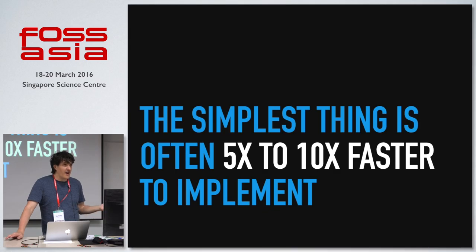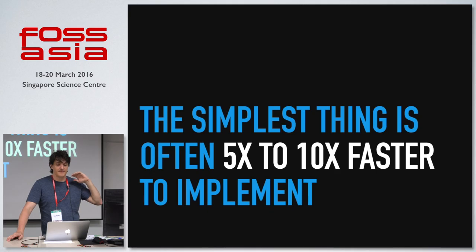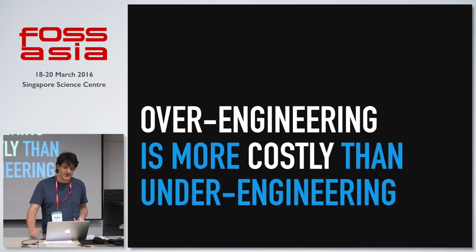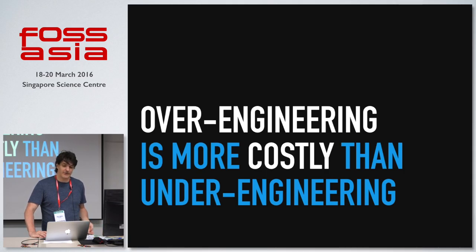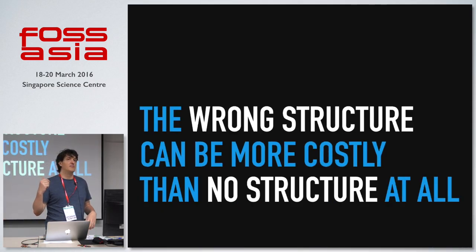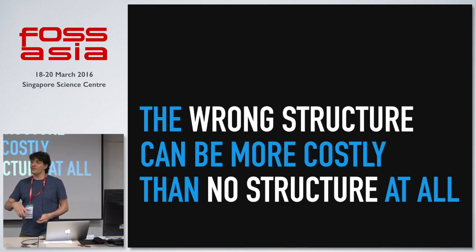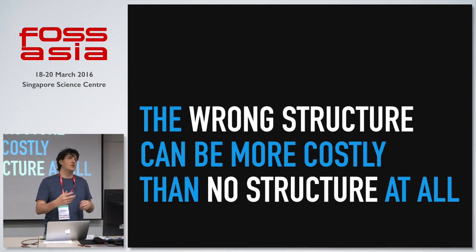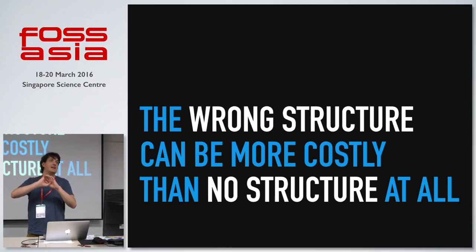I've discovered that five to ten times is about the order of magnitude of complexity and time I'm adding on top of the simple solution. Over-engineering is much more costly and more common than under-engineering. When we over-engineer, we often end up building the wrong structure. The wrong structure can be more costly than having no structure at all. The most flexible piece of code is code that hasn't made any assumptions — you can come in and just grab some pieces and move things around.